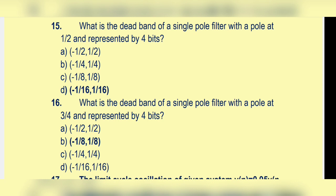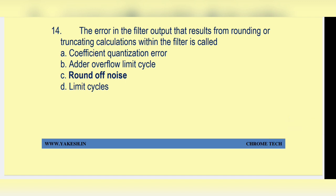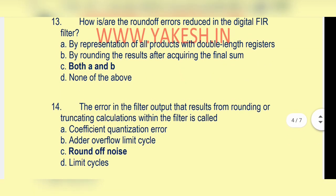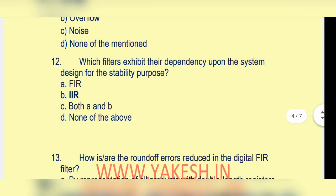Dead band of single pole filter with pole at 1/2, 4 bits — option d: minus 1/16 to 1/16. Error in filter output from rounding or truncating is called option c: round-off noise. Round-off error in digital FIR filter is reduced by option c: both a and b — representing all products in double-length registers and rounding after the final sum. Which filter exhibits stability dependency? Option b: IIR.